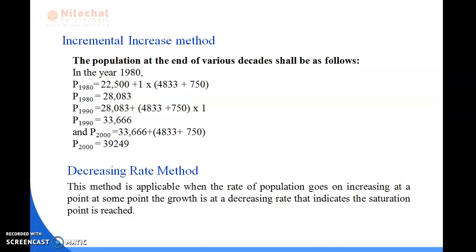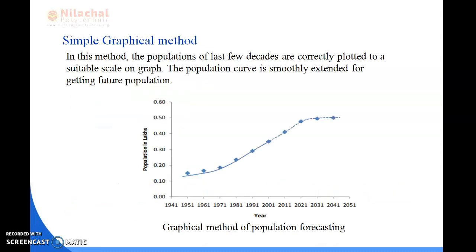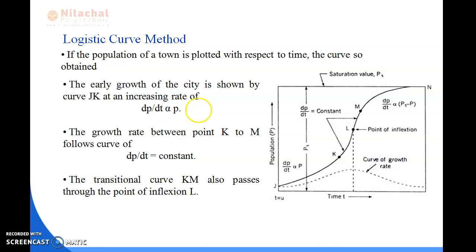Next is the simple graphical method. In this method, the populations of the last few decades are correctly plotted to a suitable scale on a graph, plotted between population in lakhs and the year. The population curve is then extended to obtain the future population estimate.